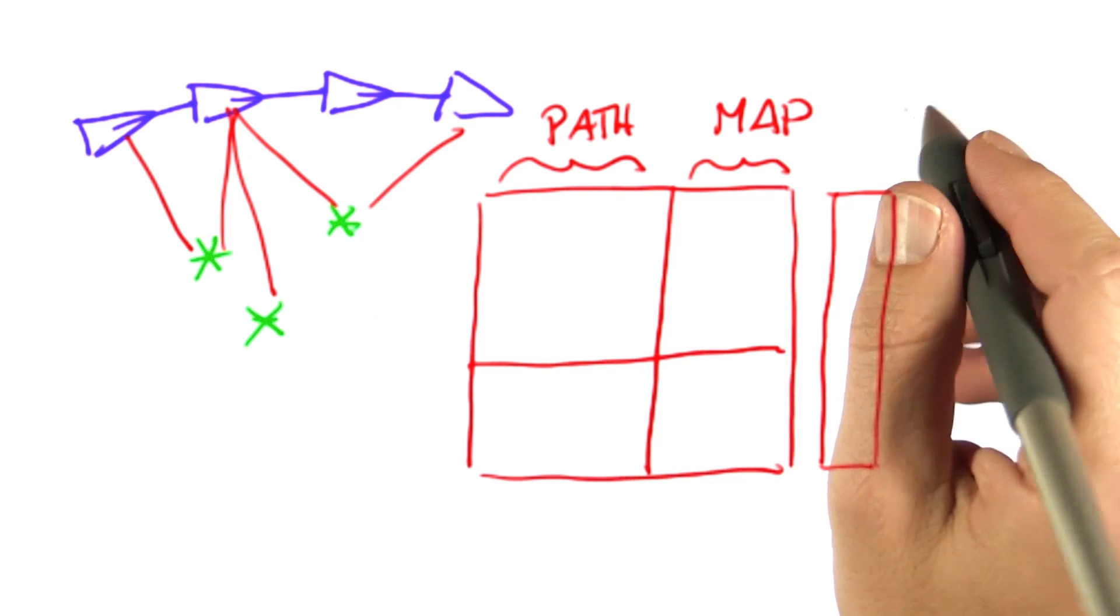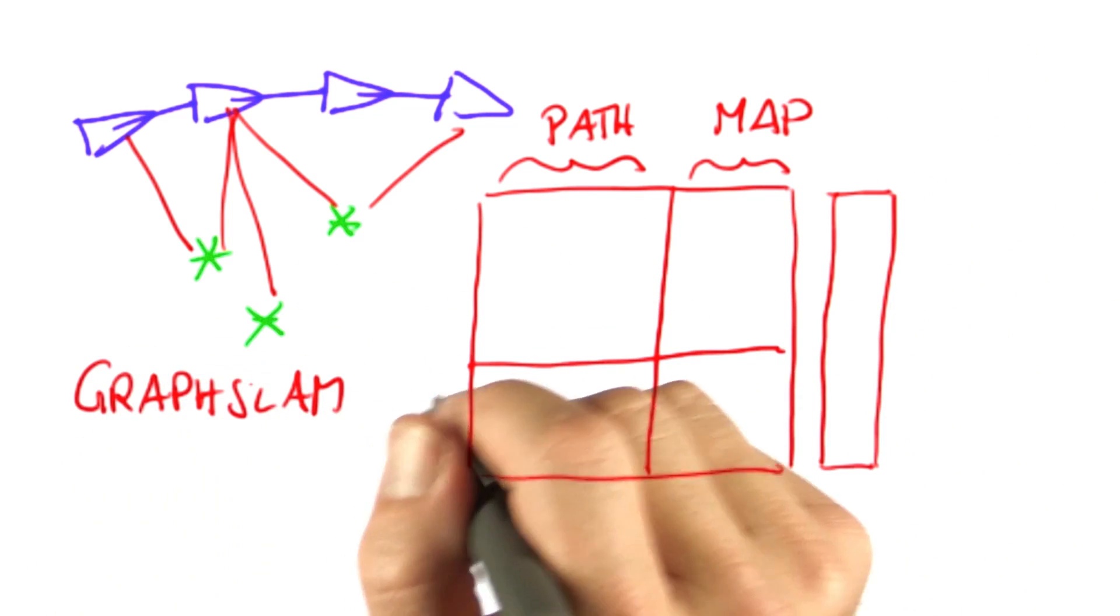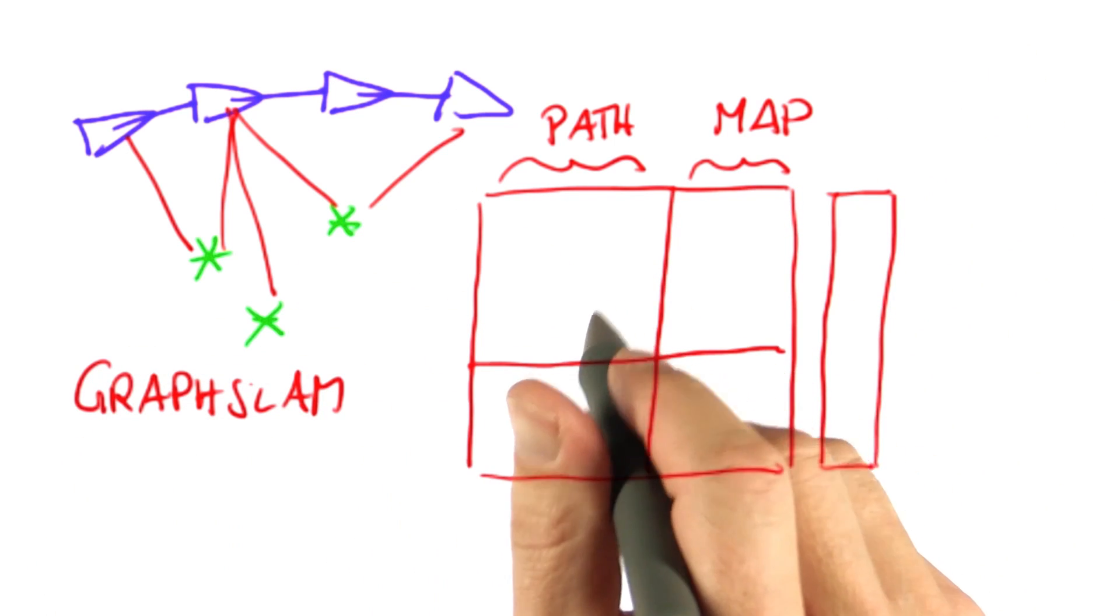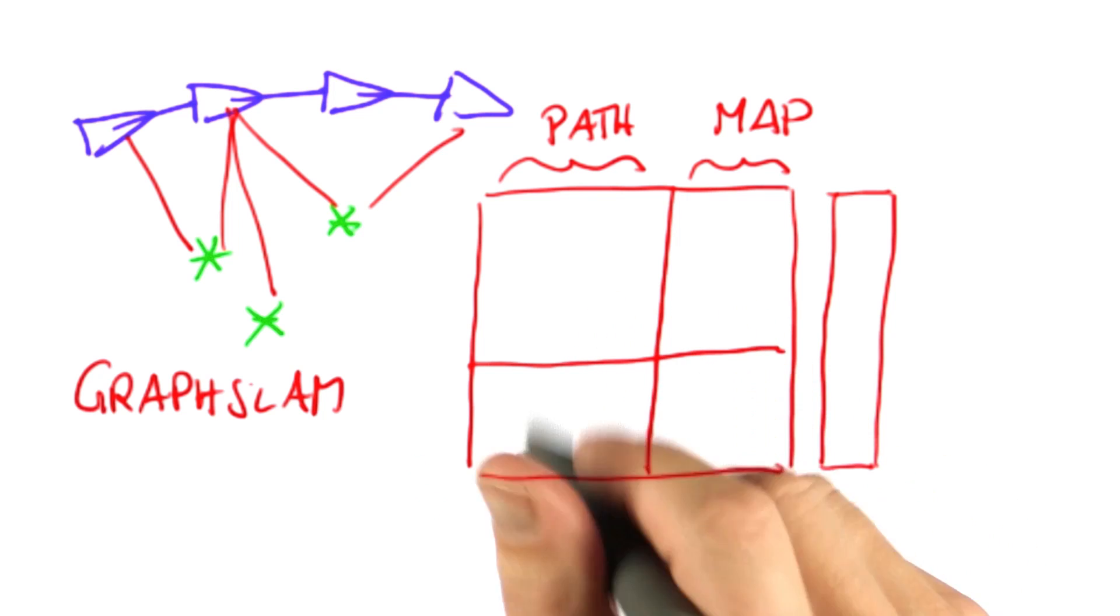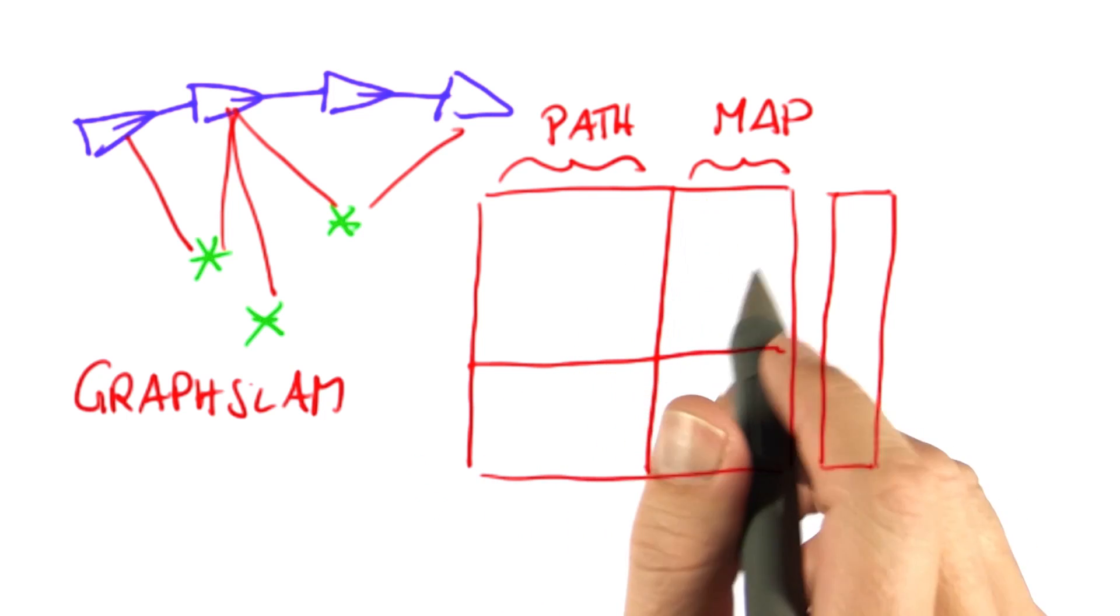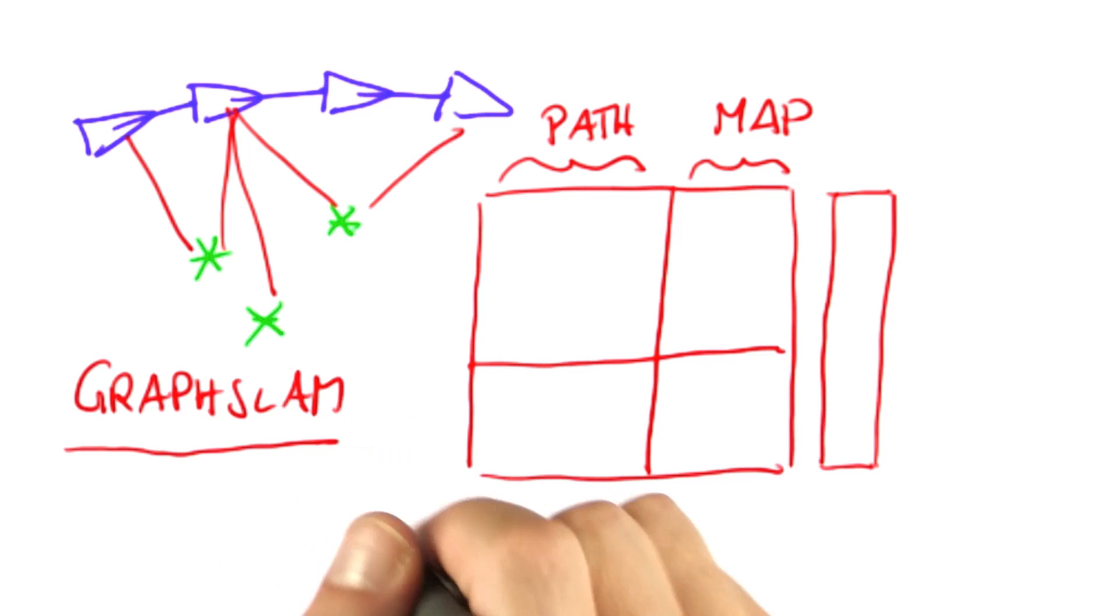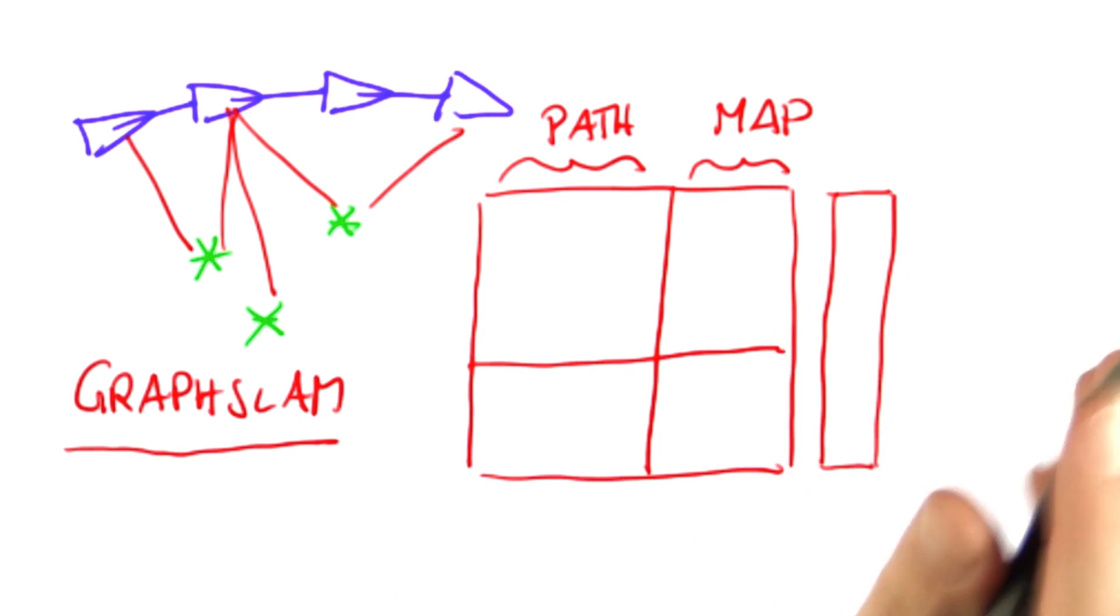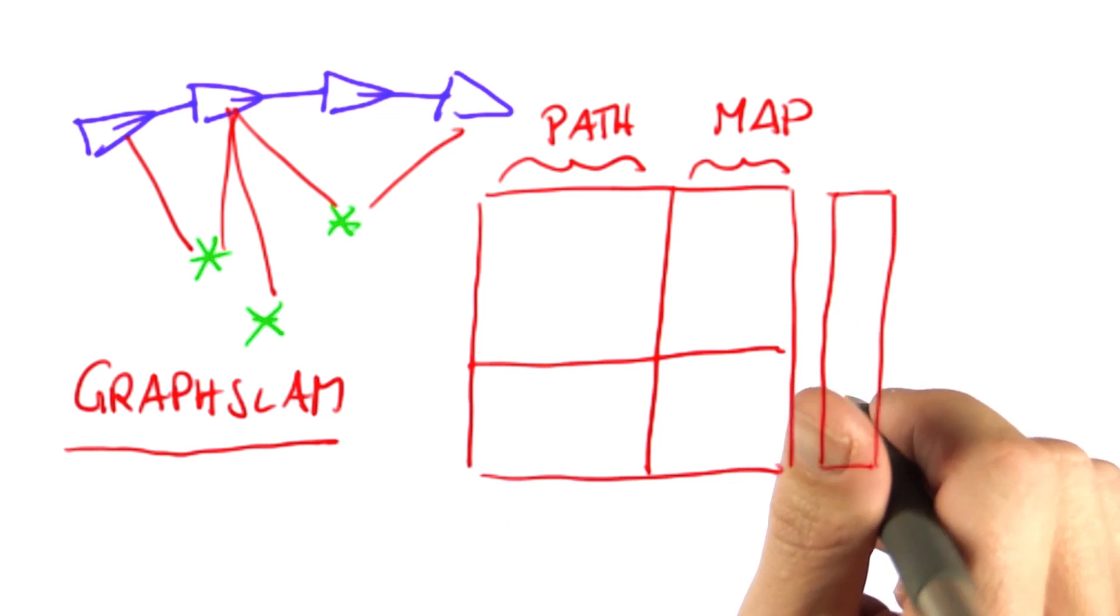And that means a robot programmed by graph SLAM will eventually stop working because it gets slower and slower. Now we all know computer operating systems that have that property. The older they are, the slower they are. But I'm not talking about how to fix operating systems. I'm just talking about how to fix SLAM.